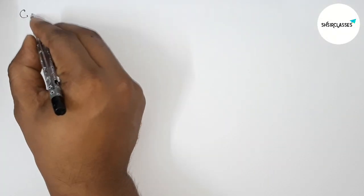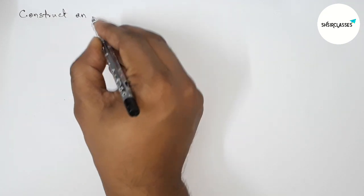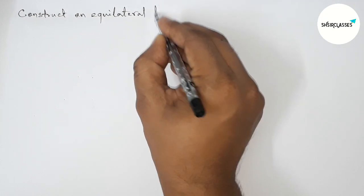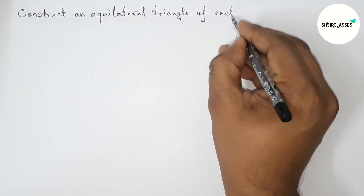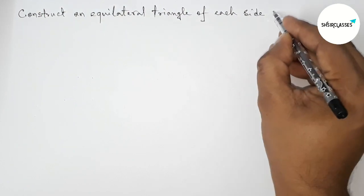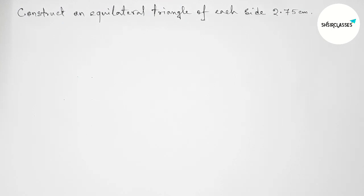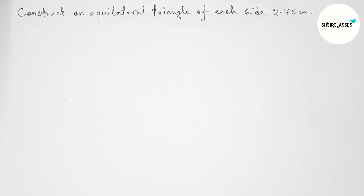Hi everyone, welcome to SI Share Classes. Today in this video we have to construct an equilateral triangle of each side 2.75 centimeters in an easy way. Please watch the video till the end. Let's start the video.